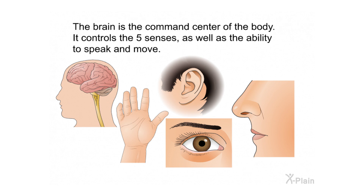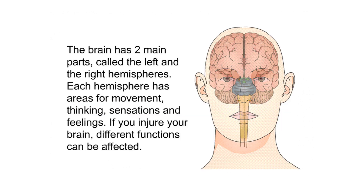The brain is the command center of the body. It controls the five senses as well as the ability to speak and move. The brain has two main parts called the left and the right hemispheres. Each hemisphere has areas for movement, thinking, sensations, and feelings. If you injure your brain, different functions can be affected.